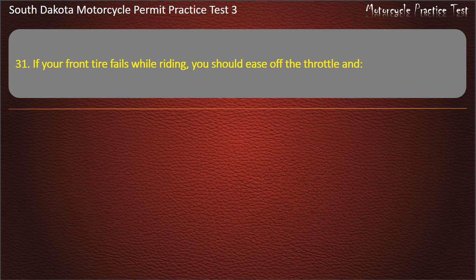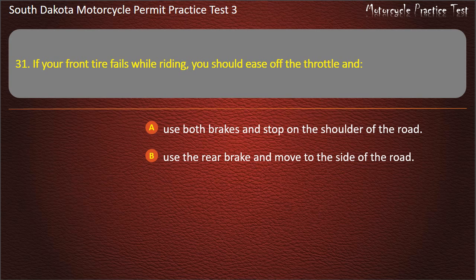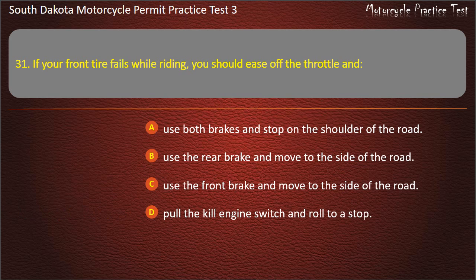Question 31: If your front tire fails while riding, you should ease off the throttle and: Use both brakes and stop on the shoulder of the road; Use the rear brake and move to the side of the road; Use the front brake and move to the side of the road; Pull the kill engine switch and roll to a stop. Answer: Use the rear brake and move to the side of the road.